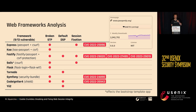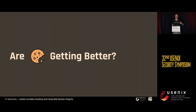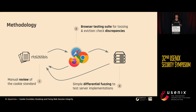All these problems are introduced by lack of cookie integrity. Can we just get better cookies without all these problems? To answer this, we revised the standard manually — RFC 6265bis — then implemented a browser testing suite for all known cookie tossing and eviction techniques, checked against Firefox, Chrome, and Safari. We did something similar for servers to understand discrepancies in how cookies are parsed server-side. Whenever we found a discrepancy, we checked what the standard intended.